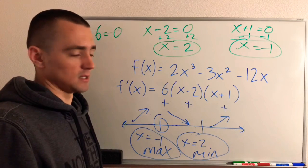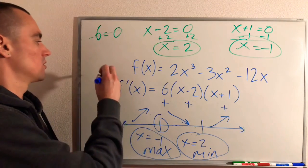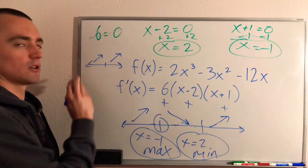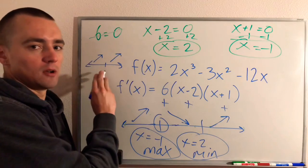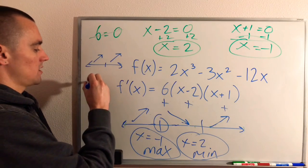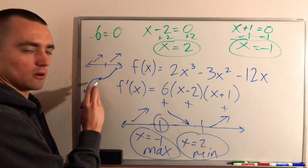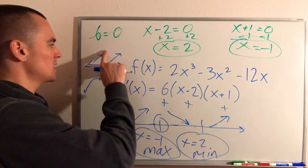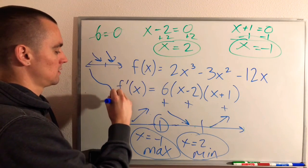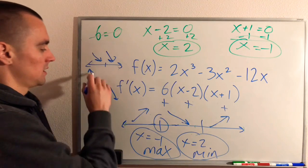The last thing the first derivative test tells us is if it's doing the same thing on both sides of the critical number. If our function was increasing on both sides — increasing to the left and increasing to the right — that would not be a local maximum or minimum; it just means the slope is zero there. Your function would be increasing, then flatten out at that critical number, and then start increasing again. Same thing if it was decreasing to both sides — that is also not a local maximum or minimum.